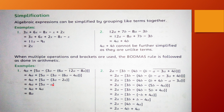Big bracket ke andar 5A minus A: 5 mein se 1 nikaalein to 4A. Bahar sign plus ka hai. Ab 4A plus 4A = 8A. The final answer will be 8A, which is a single term. You can see that algebraic expressions can be simplified by grouping like terms together.